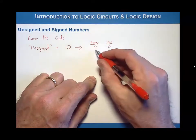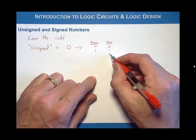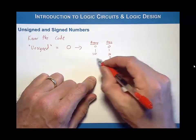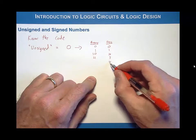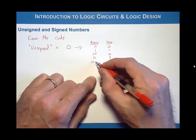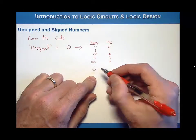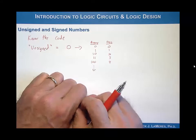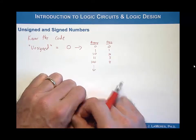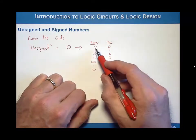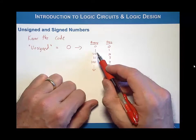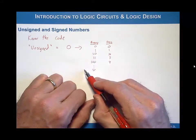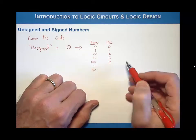Decimal one would be binary one. Decimal two would require binary one-zero. Decimal three would require one-one. Decimal four would require one-zero-zero, and so on and so forth. When we use binary numbers, we always talk about the number of bits we have. Notice that when we write on paper, we basically just add new positions as necessary to get the right value of decimal numbers.